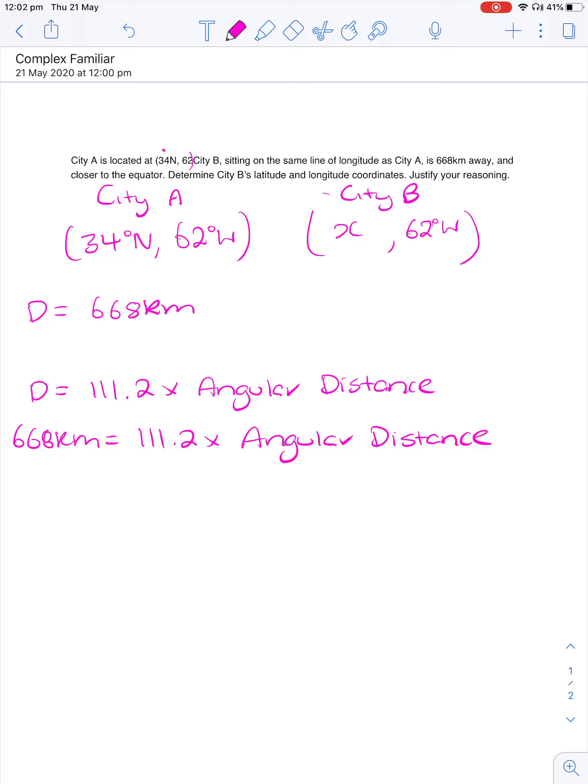And then what I'm going to do is I'm going to rearrange. So I'm going to take this 111.2 over and divide it. And that's going to give us our angular distance. That's going to give us 6.01 degrees.